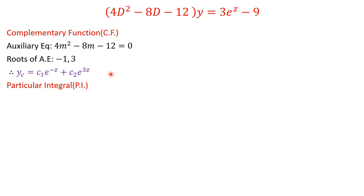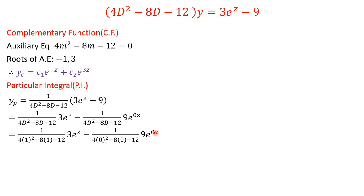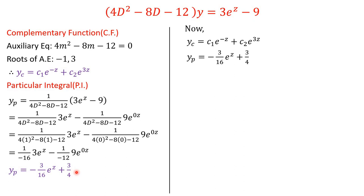Now let's find the particular integral: y_p = [1/(4D²−8D−12)]·(3e^z − 9). We separate the two terms and write 9 as 9e^(0z). Using the shortcut method for exponential functions: for 3e^z (a=1), replace D by 1 to get one term; for 9e^(0z) (a=0), replace D by 0 to get the other term. This gives y_p = −3/16·e^z + 3/4.